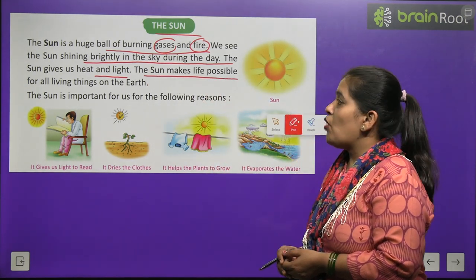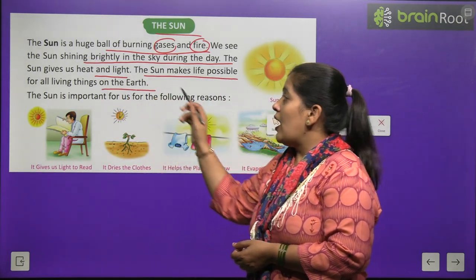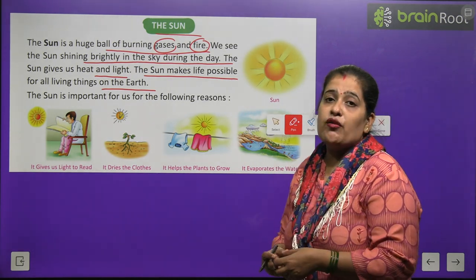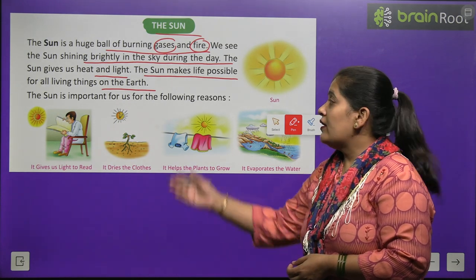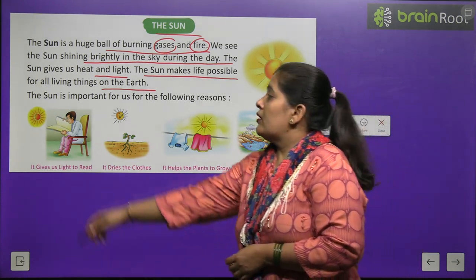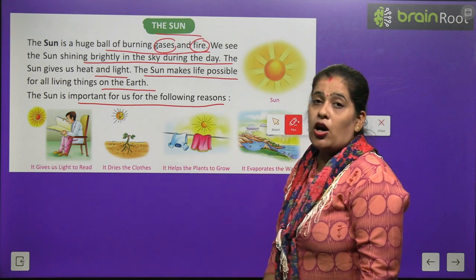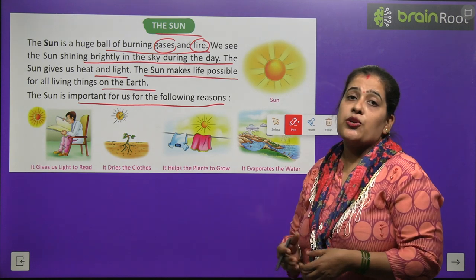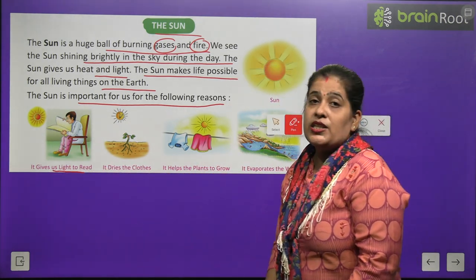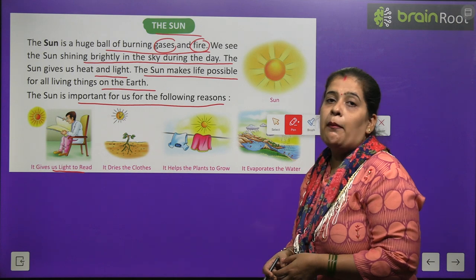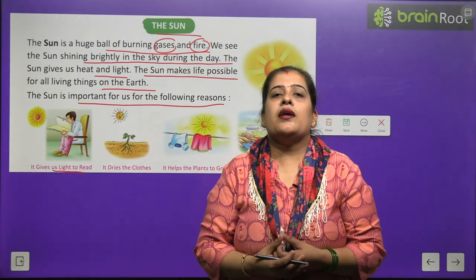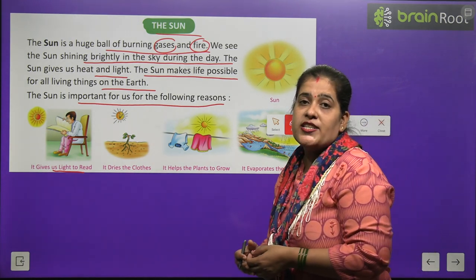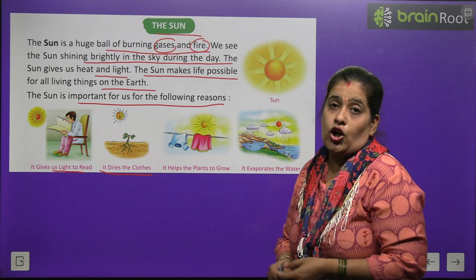The sun makes life possible for all living things on the earth. Suraj sabhi living things ke jeevan ko dharti par possible banata hai. The sun is important for us for the following reasons. It gives us light to read — woh hume roshni deta hai padne ke liye. Agar kamre mein andhera ho, toh aap padh nahi payenge. Uske liye aapko roshni ki avashyakta hai.